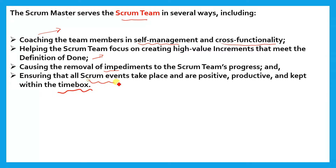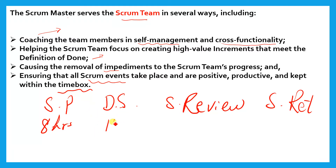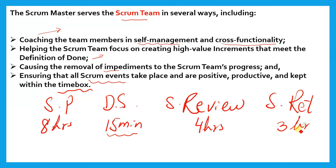Ensuring that all Scrum events take place and are positive, productive, and kept within the time box. There are four formal events: the first is sprint planning, then the daily Scrum, third is the sprint review, and fourth is the sprint retrospective. These are compulsory formal events. Each event has a time box. Sprint planning has a maximum of eight hours if the sprint is one month. Daily Scrum is 15 minutes. Sprint review is four hours for a one-month sprint. Sprint retrospective is three hours for a one-month sprint.